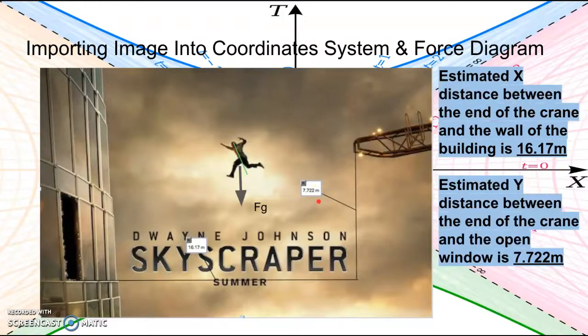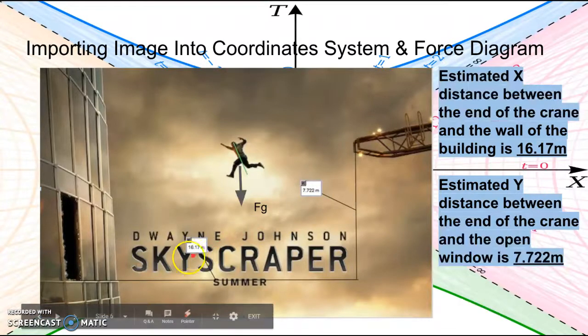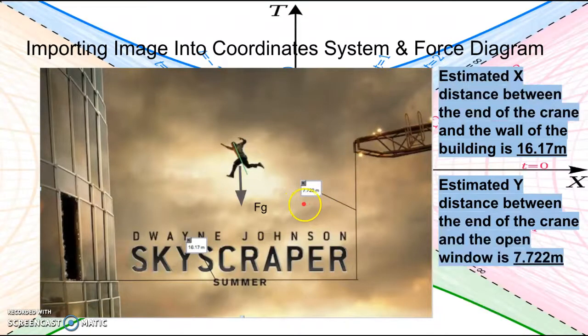First, we used a measuring tool in LoggerPro to measure how tall The Rock is. And we used him as a scale to find his vertical and horizontal distance that he has to jump to the building. The horizontal jump would have to be 16.17 meters, and his vertical jump will be 7.722 meters.